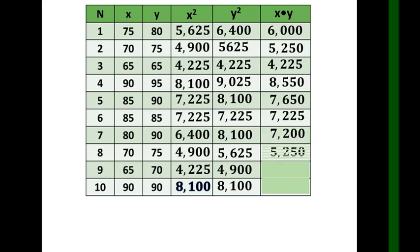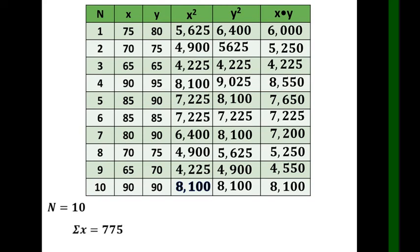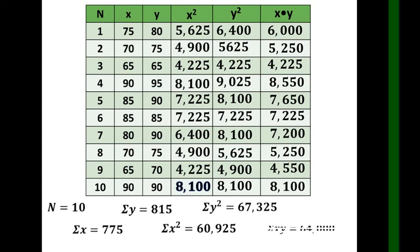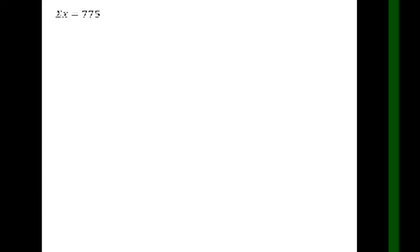For the xy products, we multiply each paired x and y value: 70×75, 65×65, 90×95, 85×95, 85×95, 85×85, 80×85, 80×90, 70×75, 65×70, 90×90. The totals are: Σx=775, Σy=815, Σx²=60925, Σy²=67325, Σxy=64000.